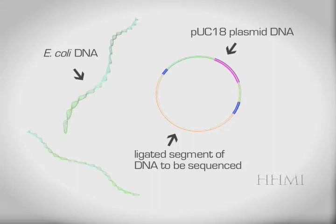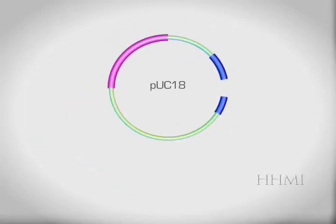If you remember, PUC18 plasmid and E. coli have known genomic codes. Also, the sheared segments of DNA that we want to sequence were inserted in a very specific location in the plasmid DNA.